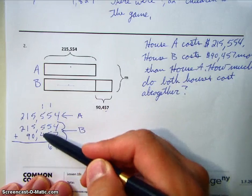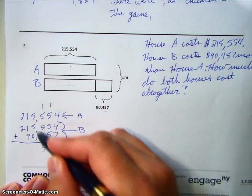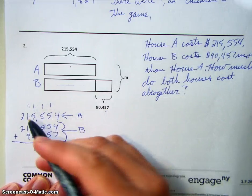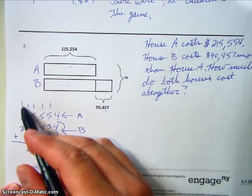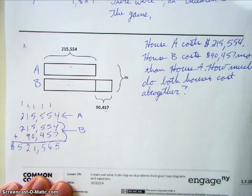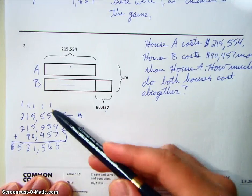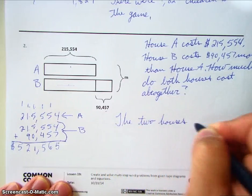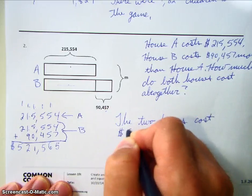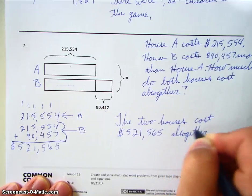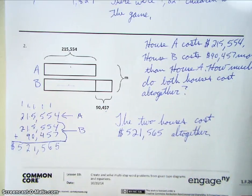Working through the addition: 1 plus 5 is 6, plus 5 is 11, plus 4 is 15. Then 5 plus 5 is 10, plus 1 is 11. Then 1 plus 1 plus 1 is 3, plus 9 is 12. And then 2 plus 2 is 4, plus 1 is 5. So we get a total amount of $521,565. We've combined our two steps into one larger addition problem, and the two houses cost $521,565 altogether.